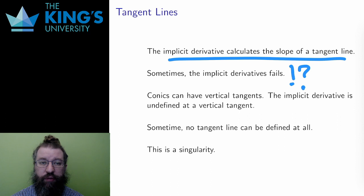Sometimes the calculation fails. I showed this last week with vertical tangents. A locus, such as a circle, can have a vertical tangent, and a vertical line has no slope, so the implicit derivative can't be defined at such a point.